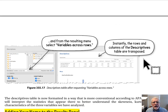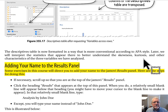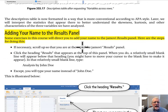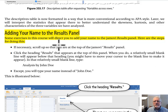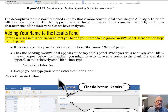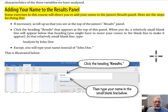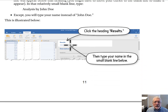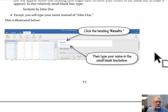Adding your name to the results panel: some exercises in this course will direct you to add your name to the Jamovi results panel. You can read the steps and follow them when doing your exercise. Basically it just involves clicking the results panel and then typing your name below the Results heading.